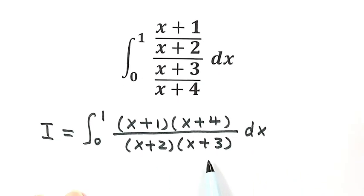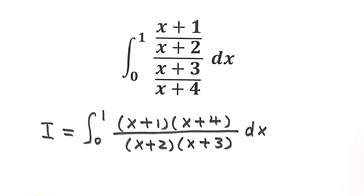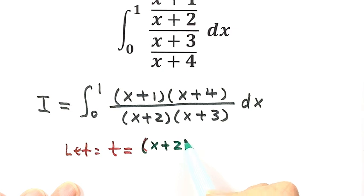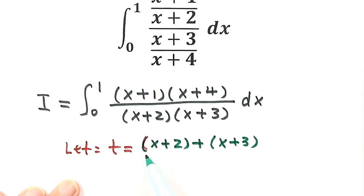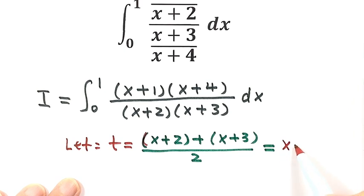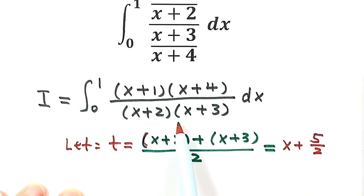We want to simplify the denominator by defining a new variable so that we'll have something easier to integrate. So we're going to define a new variable t. Let t equal the average of the two factors: t equals (x+2 + x+3) divided by 2. Simplifying, we get t equals x + 5/2. So x + 5/2 is the midpoint of these two factors.